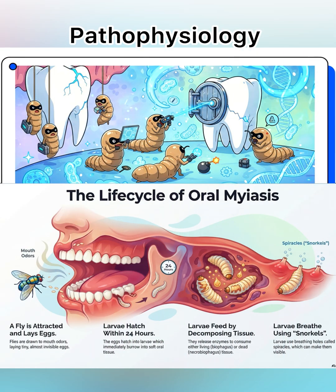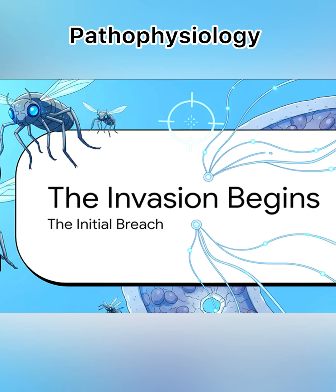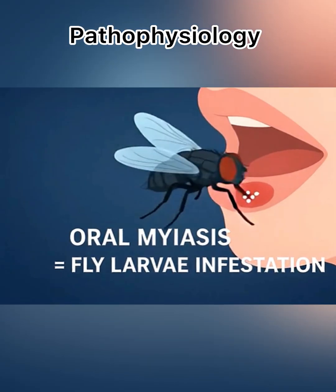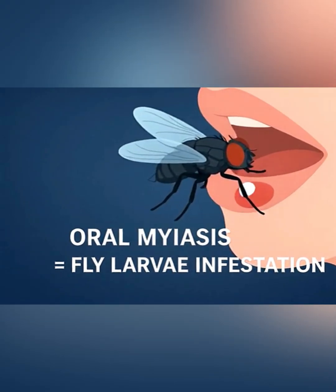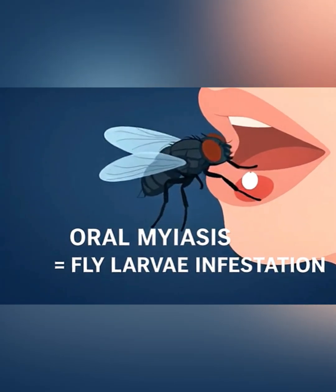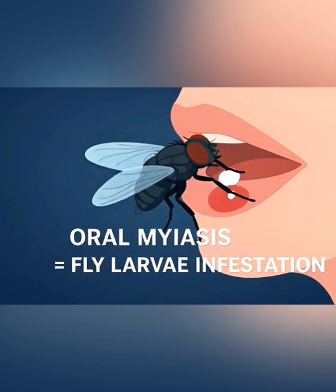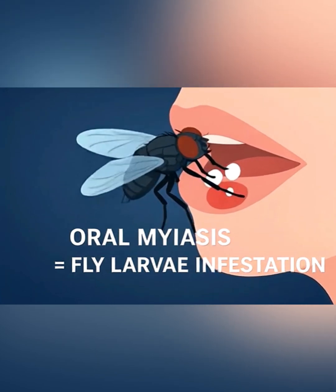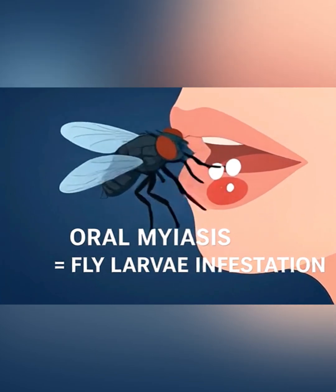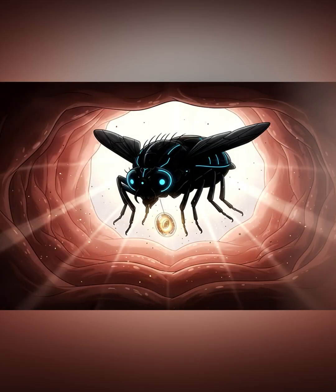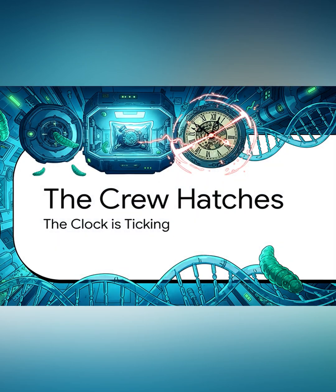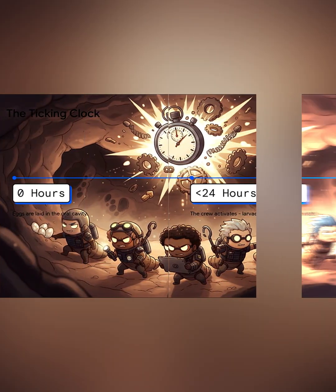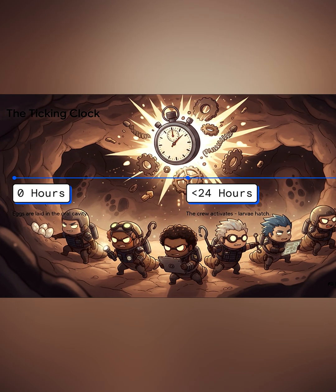Now let's understand the pathophysiology. The opportunist fly sits near your mouth, usually attracted to bad odour, wound exudate, blood, or necrotic tissue. It lays small, almost invisible eggs into the oral cavity. Within 24 hours, these eggs hatch into larvae.